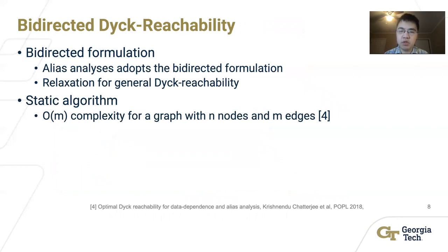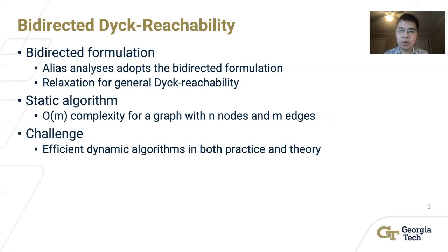Different approaches to compute the Bidirected Dyck-Reachability from scratch have been proposed. For a graph with n nodes and m edges, the optimal algorithm has been shown to have an O(m) complexity. The optimal static algorithm has a linear runtime and can be used as a naive approach to recompute the Dyck-Reachability for dynamic edge updates. Thus, it is challenging to design a dynamic algorithm which is better than the static algorithms in both theoretical running time and in practice.